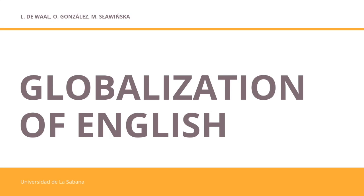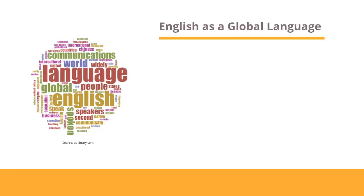Hello everyone, today we're going to talk about the globalization of the English language. So what is a global language? Well, according to David Crystal, it is a language that is recognized around the world to perform official and functional roles within certain communities. It is a large community of speakers combining English as a first language, English as an official language, and or English as a foreign language.